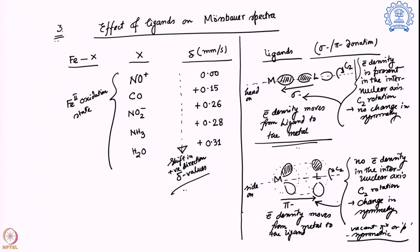So these are the two interactions we can have: sigma donation and pi interaction. Sigma interaction is a head-on interaction where electron density is present in the internuclear axis and there is no change in symmetry with C2 rotation. Pi interaction has no electron density in between and a change in symmetry with C2 rotation. Sigma is always the first interaction formed; pi can arise later depending on the availability of orbitals with the correct symmetry orientation.